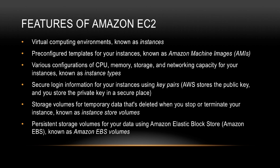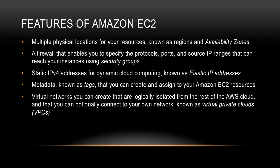We'll talk more about the differences between instance store volumes and Amazon EBS volumes. EC2 instances can be launched at multiple physical locations known as regions and availability zones. We also have firewalls that enable us to specify the protocols, ports, and source IP ranges allowed to reach the instances — these virtual firewalls are known as security groups. We also have static IPv4 addresses known as elastic IP addresses, and metadata known as tags which can be assigned to EC2 resources. Virtual networks logically isolated from the rest of the AWS cloud, optionally connected to on-premises infrastructure, are called virtual private clouds.